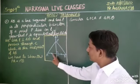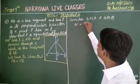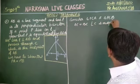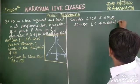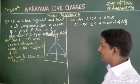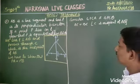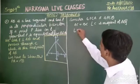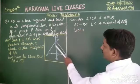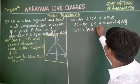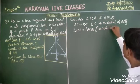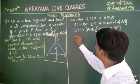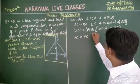In those triangles, we know that AC is equal to CB, because C is the midpoint of AB. Angle PCA is equal to angle PCB — both are 90 degrees. And PC is equal to PC, which is the common side.